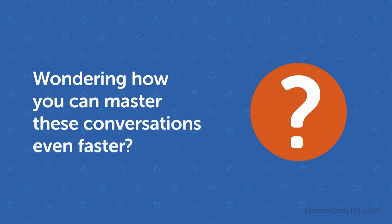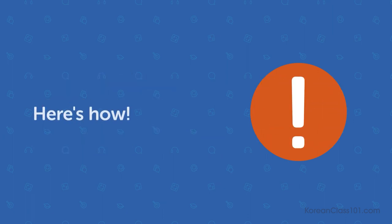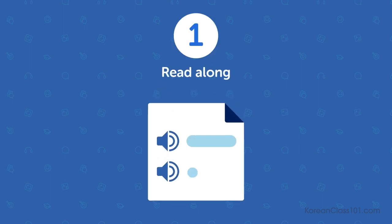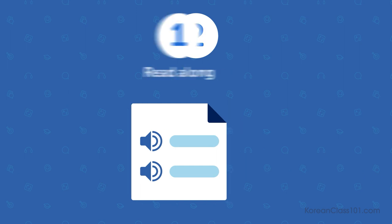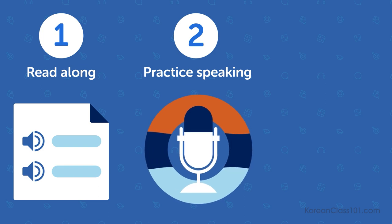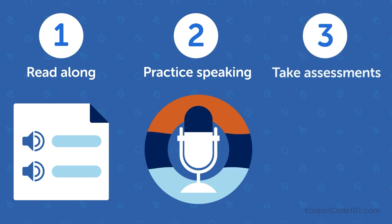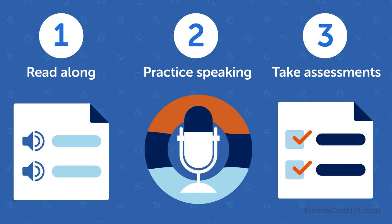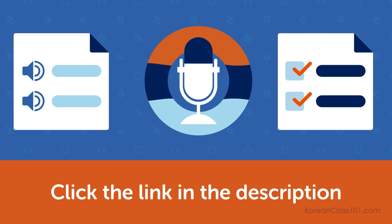Wondering how you can master these conversations even faster? Here's how. 1. Read along — you get the lesson conversation and translations inside our dialogue tool, so that you see each word as you hear it and understand it all. 2. Practice speaking — by shadowing what you hear, you can also record and compare yourself with native speakers using our voice recording tools. And 3. Take our assessment tests and see how much you remember. These tools are part of our CanDo course. Just click the link in the description to get them.